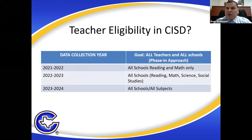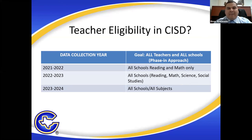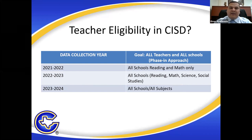We wanted to do a phased approach because from our experience, that's going to be the most successful approach when dealing with such a massive initiative as the teacher incentive allotment. When you have that much money with that many people, you want to make sure you get it right the first time. You don't want to go all in and then have huge mistakes and have to pay some money back or upset any teacher. We're going to minimize that, if not eliminate it, by implementing a phase one, two, and three approach.